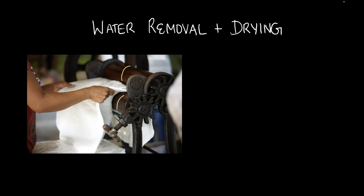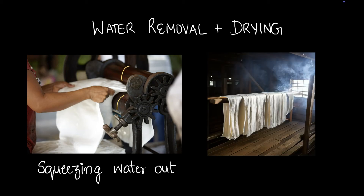After squeezing out the water, we dry the rubber. Unlike drying clothes in sunlight, we do this inside a room — a smoke house — where wood is burned. The smoke helps the rubber sheets dry out quickly. After a few weeks of drying, you get dried rubber sheets.